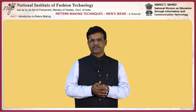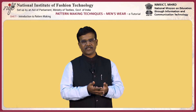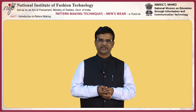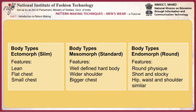The distribution of body fat is more in the upper torso rather than the lower torso, and in the abdomen rather than the hips. Usually three body types are followed in menswear pattern making: ectomorph, mesomorph, and endomorph. Ectomorph features are lean, flat chest, and small chest. Mesomorph features are well defined, hard body, wider shoulders, and bigger chest. Endomorph features are round, short and stocky, with hip, waist, and shoulders similar in proportion.